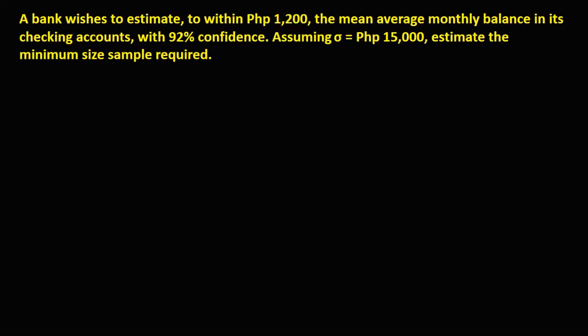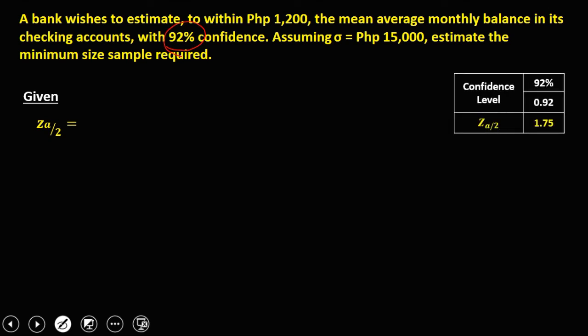For this problem: a bank wishes to estimate, to within 1,200 pesos, the mean average monthly balance in its checking accounts with 92% confidence. Assuming the population standard deviation is 15,000, estimate the minimum sample size required. For the confidence coefficient, since we have a 92% confidence level, the confidence coefficient is 1.75. The margin of error is 1,200 and the population standard deviation is 15,000.